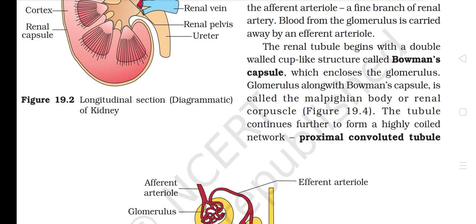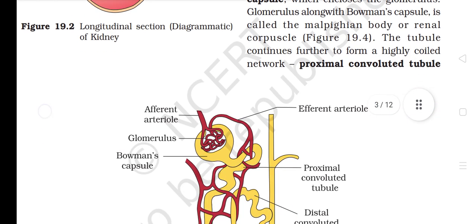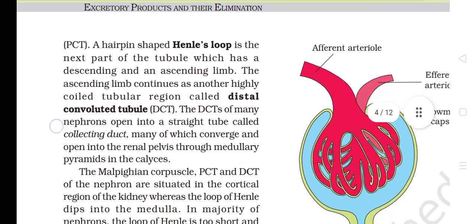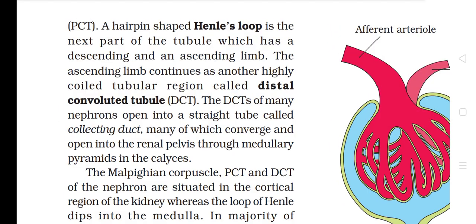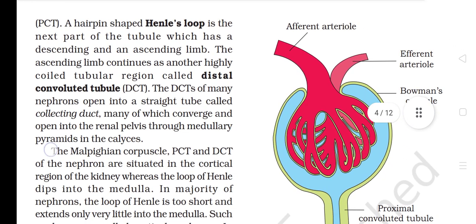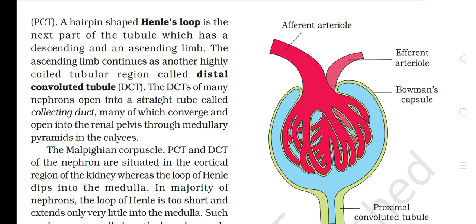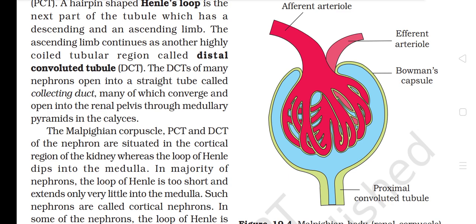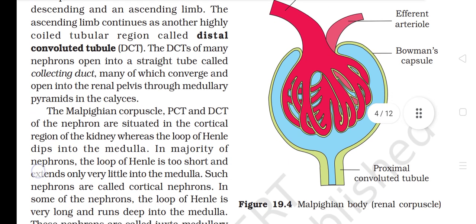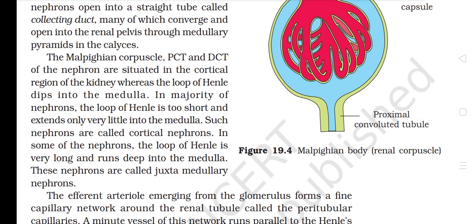The glomerulus is a tuft of capillaries formed by the afferent arteriole, a fine branch of the renal artery. Blood from the glomerulus is carried away by an efferent arteriole. The renal tubule begins with a double-walled cup-like structure called Bowman's capsule, which encloses the glomerulus. Glomerulus along with Bowman's capsule is called the Malpighian body or renal corpuscle. The tubule continues as the proximal convoluted tubule (PCT), followed by a hairpin-shaped Henle's loop with a descending and an ascending limb, then the distal convoluted tubule (DCT). DCTs of many nephrons open into a collecting duct, which converges and opens into the renal pelvis through medullary pyramids.